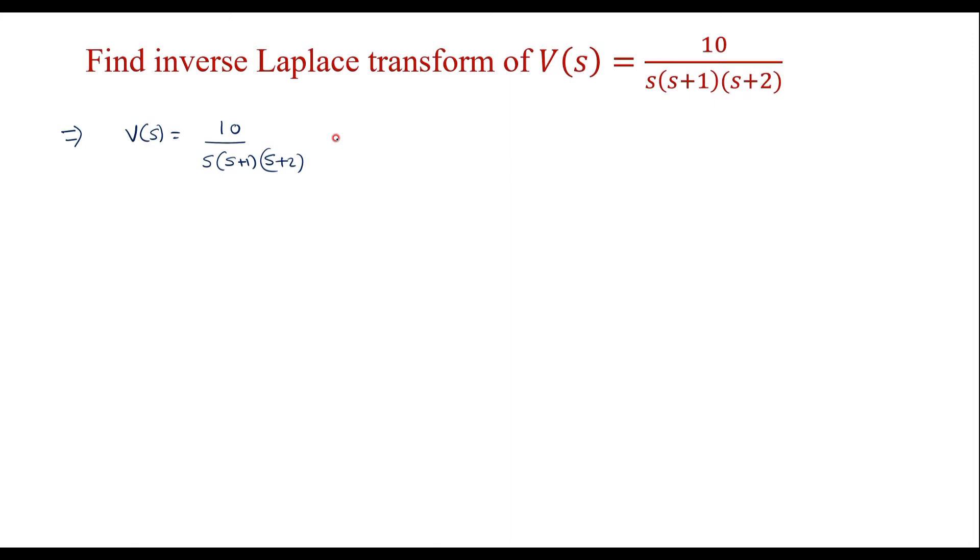So the same equation I can represent as A divided by s plus B divided by (s+1) plus C divided by (s+2). Now let us calculate the constants A, B, and C.